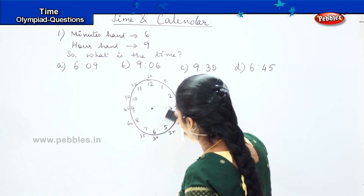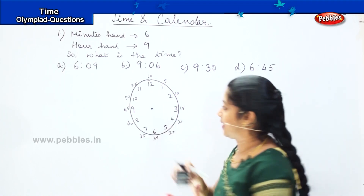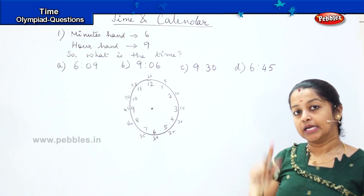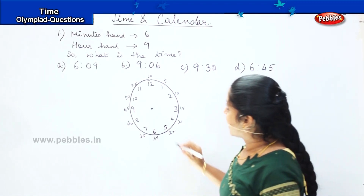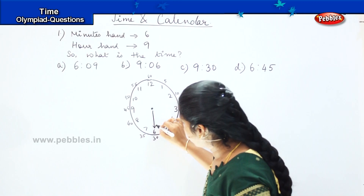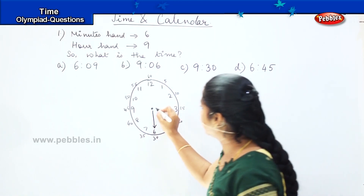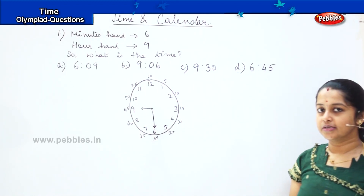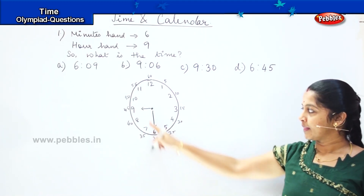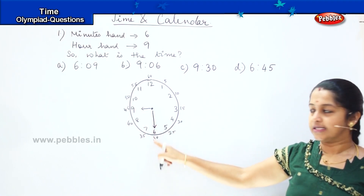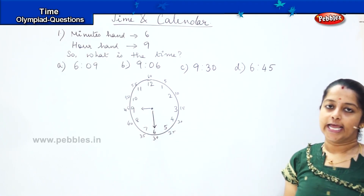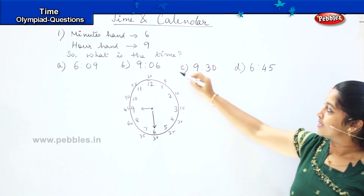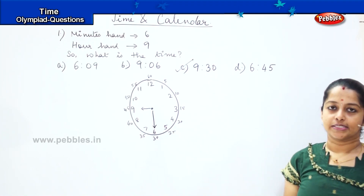So we will erase the needles as well. My question says that my minutes hand, which means the longer needle, is in 6, and my hour hand, which is the small needle, is in 9. So what is the time, children? 9 and here it is 30, so which means the time is 9:30. Option C is the right answer.